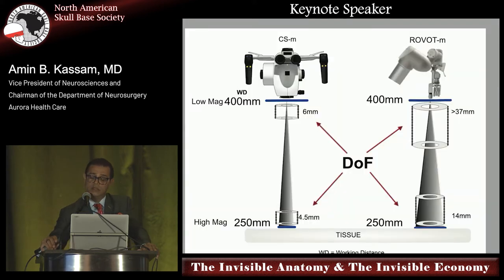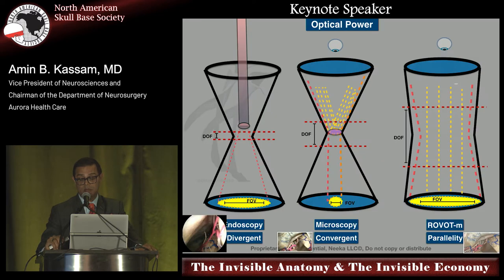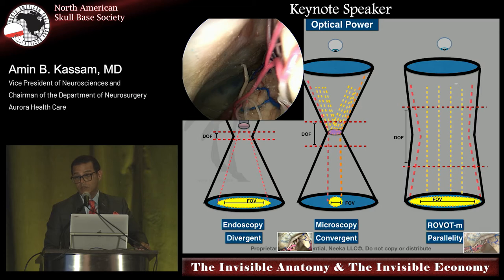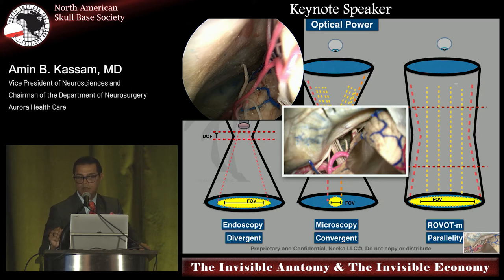That led us to trying to understand visualization pathways that improved outcomes. In doing so, we started to look at the math of the way that light was being delivered. We learned that the physics of optics put us in a position where light delivery was becoming a major problem. We were getting wide fields of view in narrow corridors — that's what the endoscope was doing. The microscope afforded us extraordinary deep fields of view, and we just couldn't get them with the microscope.